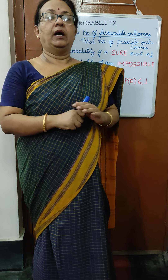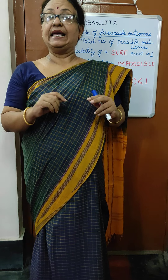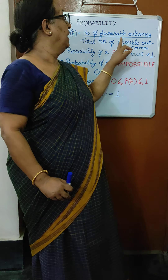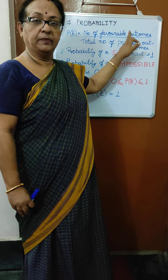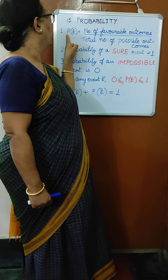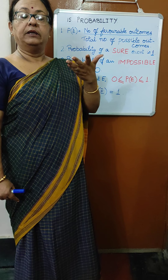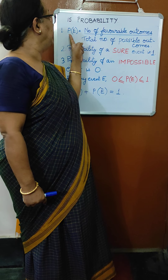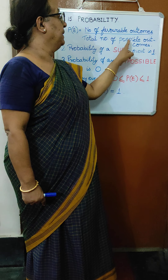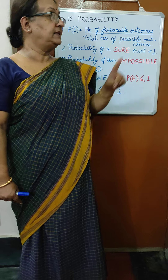Now suppose when I toss a coin, I want a head. So head is a favorable outcome. What are the total possible outcomes? Either head or tail — only two possible outcomes. So favorable outcomes = 1 (head), and possible outcomes = 2. By this formula, probability of getting a head = number of favorable outcomes divided by total number of possible outcomes = 1 by 2.